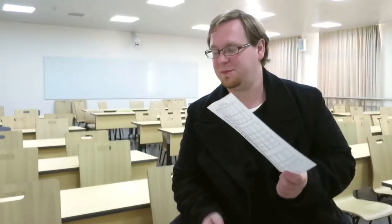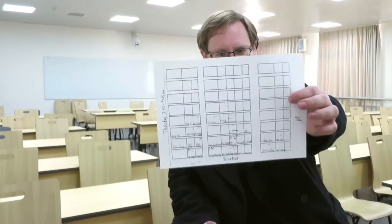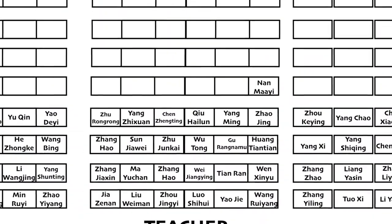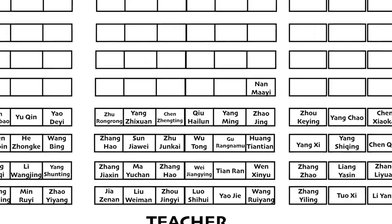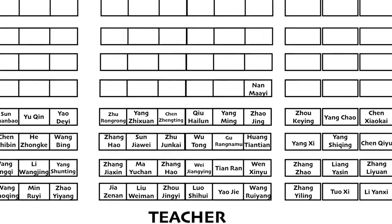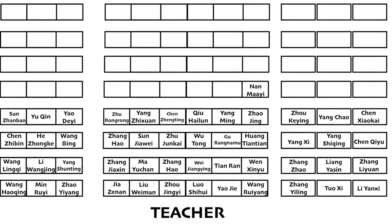Then what I do next is pass around a seating chart. I have them write their name in the seating chart. I designed this seating chart based on the layout of the classroom. Here's a final draft appearing on screen. That is where they sit, and that is how I mark their grades.